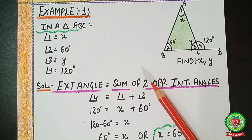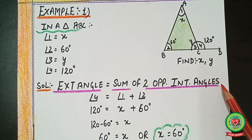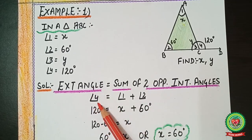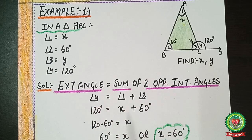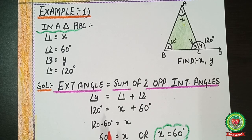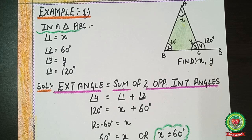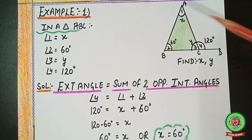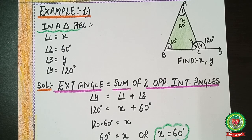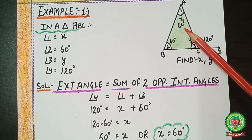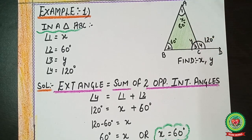Using the exterior angle property: exterior angle = sum of two opposite interior angles. So angle 4 = angle 1 + angle 2. Substituting: 120 = x + 60. Shifting 60 to the other side gives 120 minus 60 = 60. So the value of x is 60 degrees.